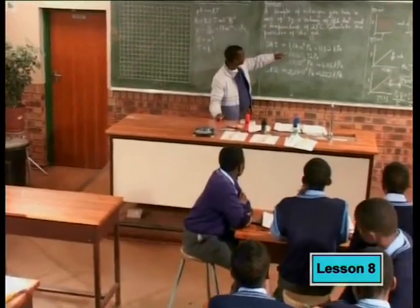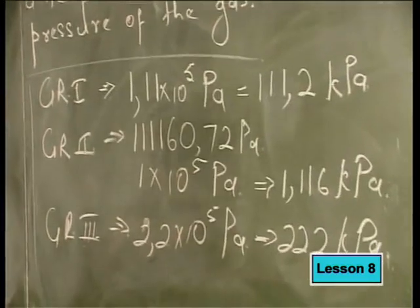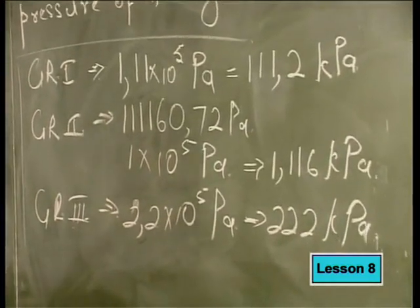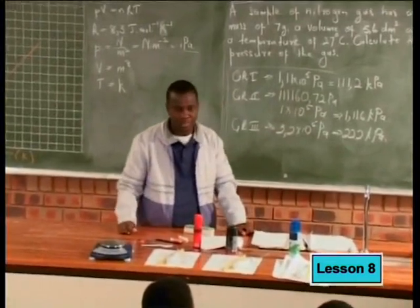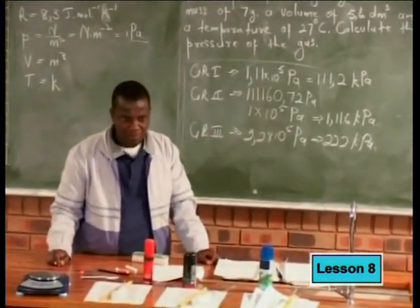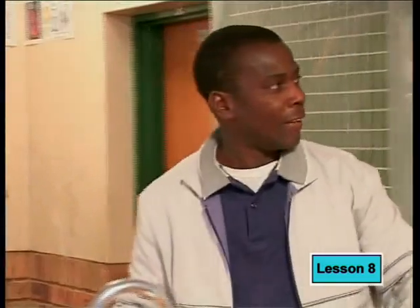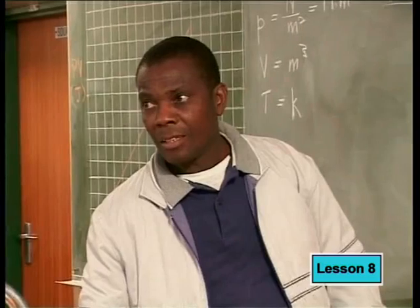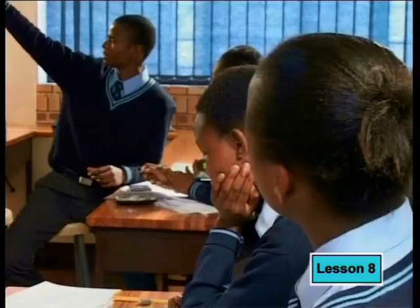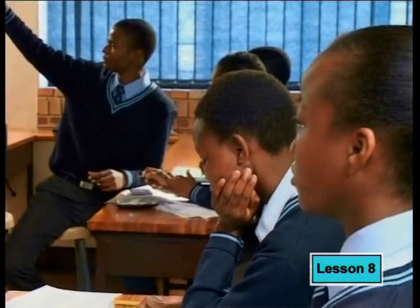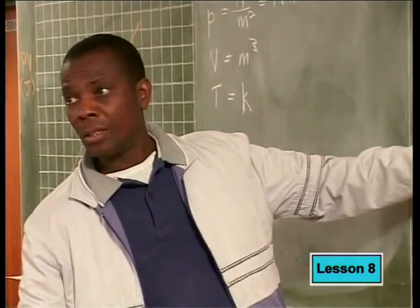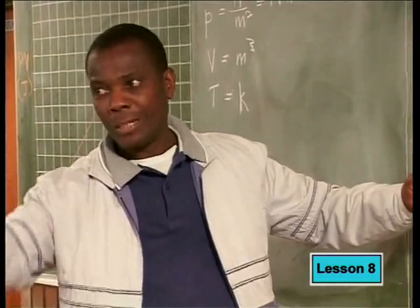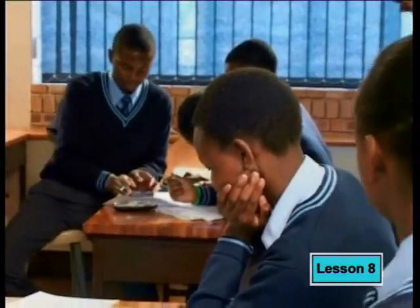Group 1 had 1.11 times 10 to the power of 5 Pascals. Now if we have to change Pascals to kilopascals, we divide by 1000. Our answer is going to be 111.2 because we converted. Did you divide 1.11 times 10 to the power of 5 by 1000? Yes — use your calculators. Divide 1.11 exponent 5 by 1000.